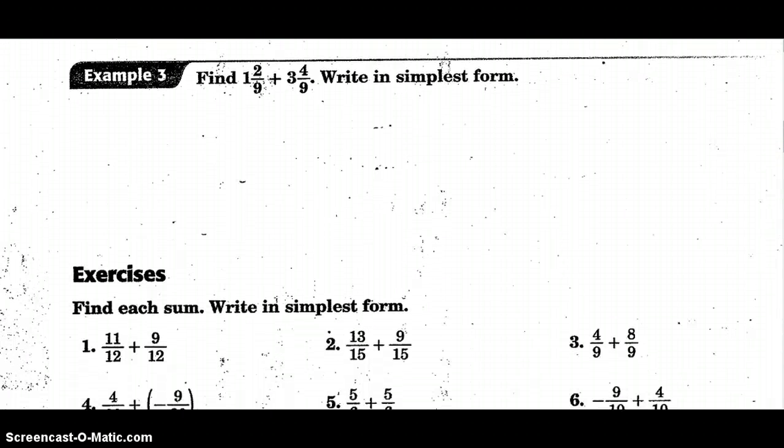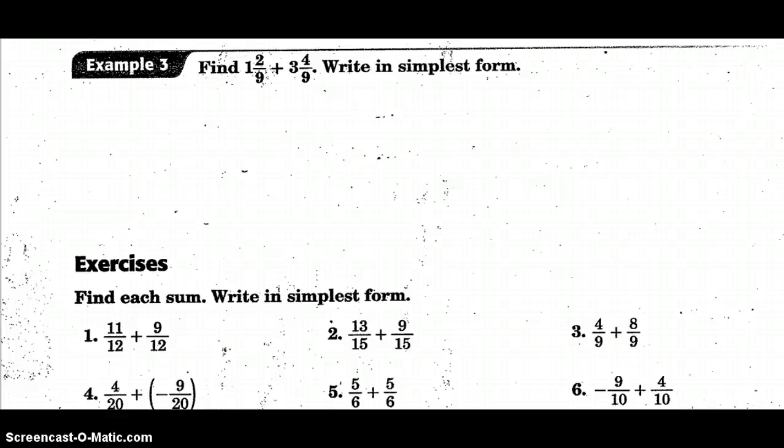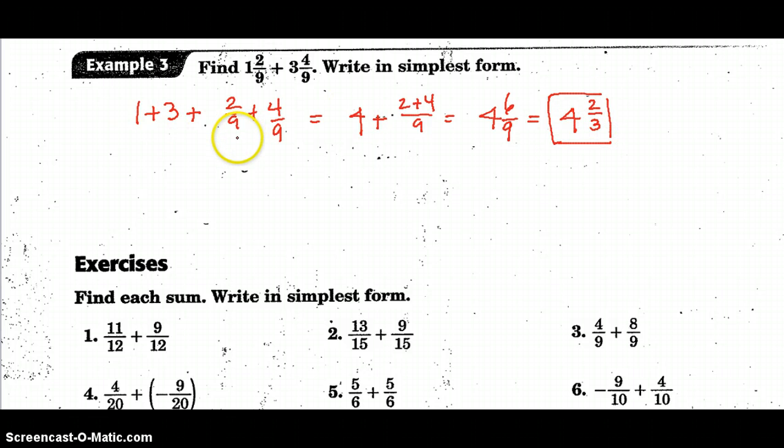The third example gives us mixed fractions, but they're still like fractions with the same denominator. I want to show you two ways to work this problem. First, because they're like fractions, you can just simply say one plus three plus two-ninths plus four-ninths. You could separate it and take care of the whole numbers and then the fractions. That's going to give you four plus two plus four over nine, so it's four and six-ninths. Six-ninths simplifies to four and two-thirds.